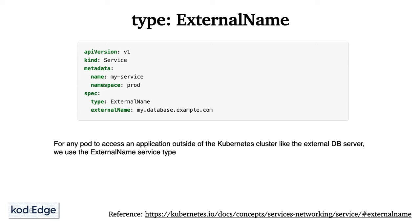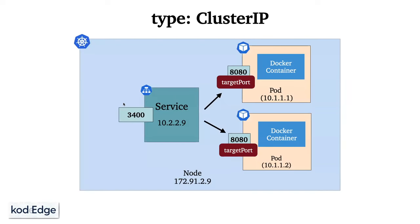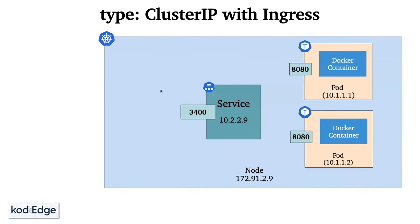ExternalName service does not define any selectors or endpoints; instead it acts as a DNS alias, mapping a service name in the cluster to an external DNS name — useful when connecting to external services using Kubernetes-style DNS. ClusterIP service exposes the pod internally within the cluster, assigns a cluster-internal IP, and can only be accessed within the cluster — suitable for services that should not be accessible from outside.